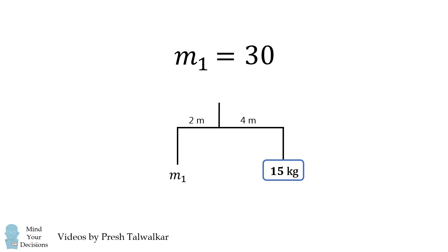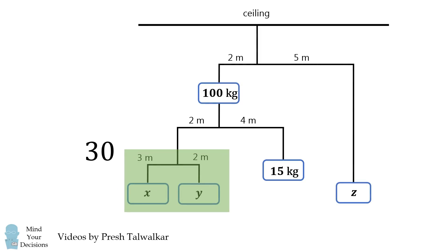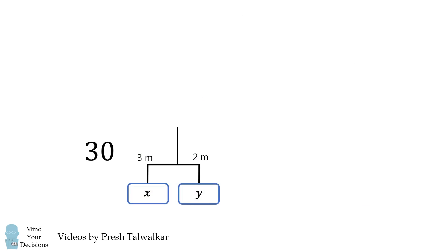But it's not a single mass. It'll be the total mass of the entire system that's hanging. Since it's the entire mass, 30 will be equal to X plus Y.